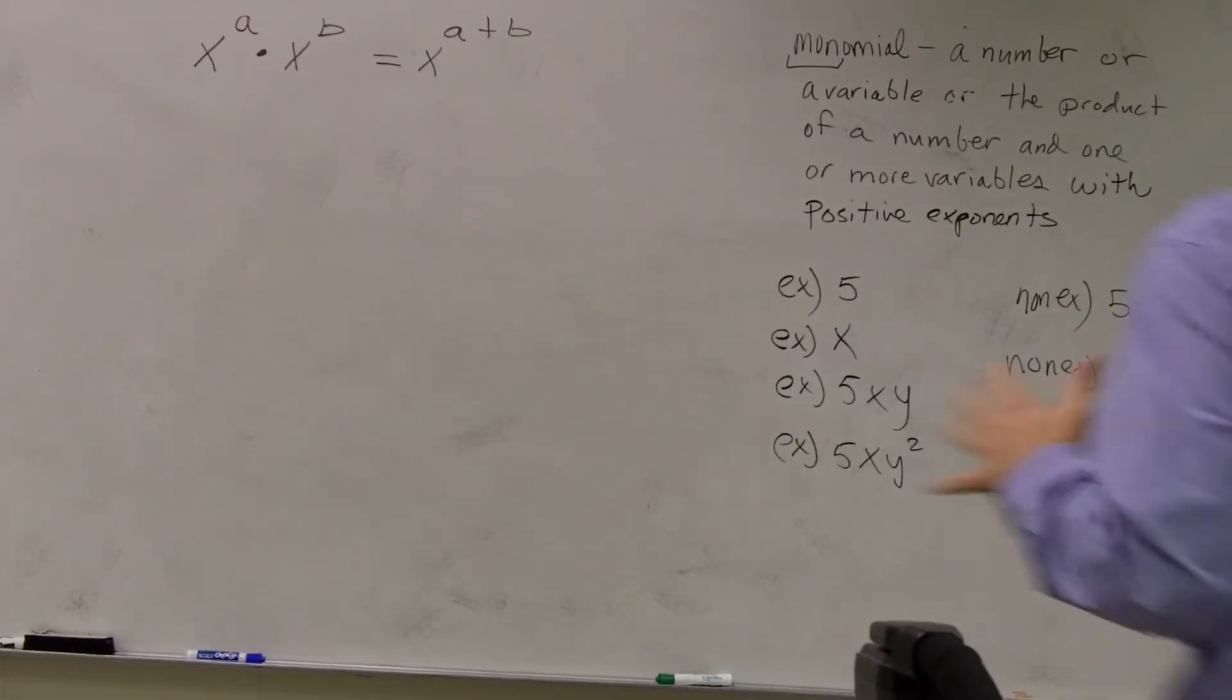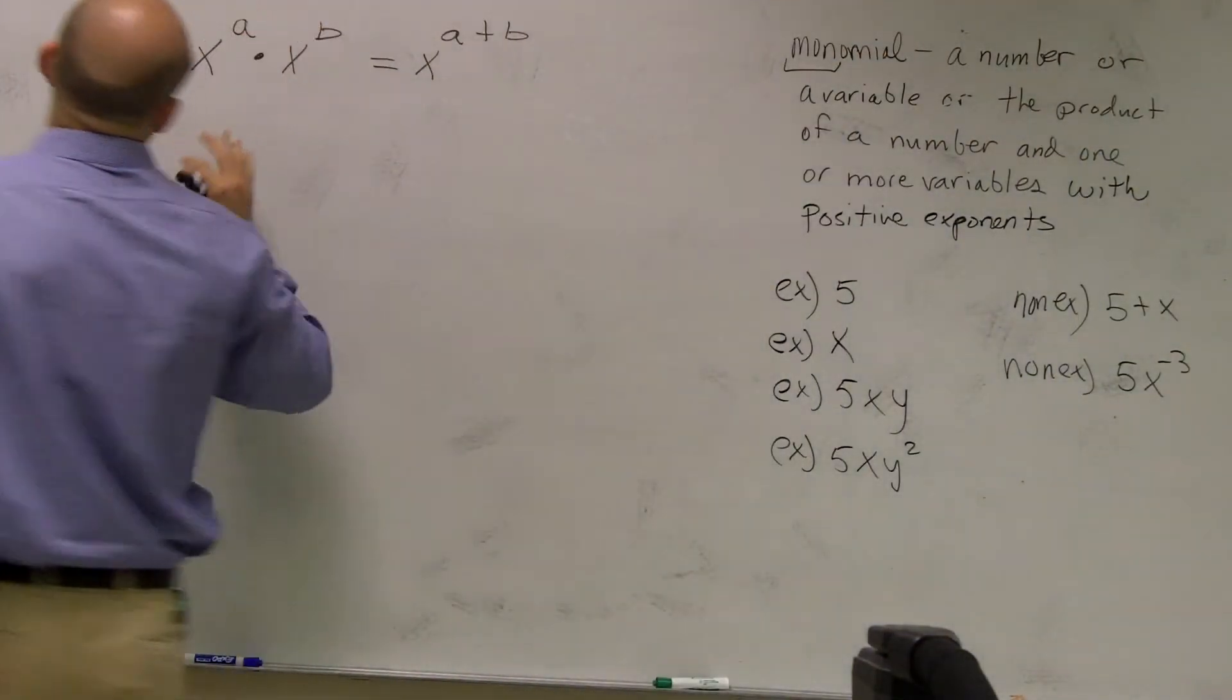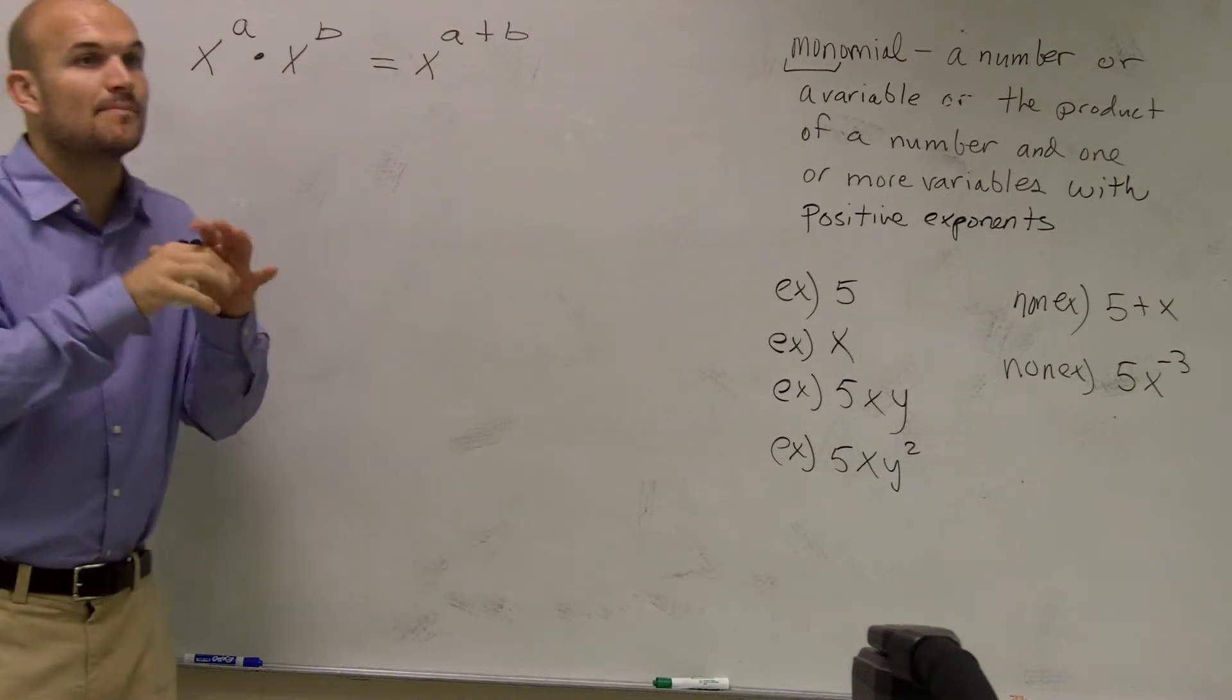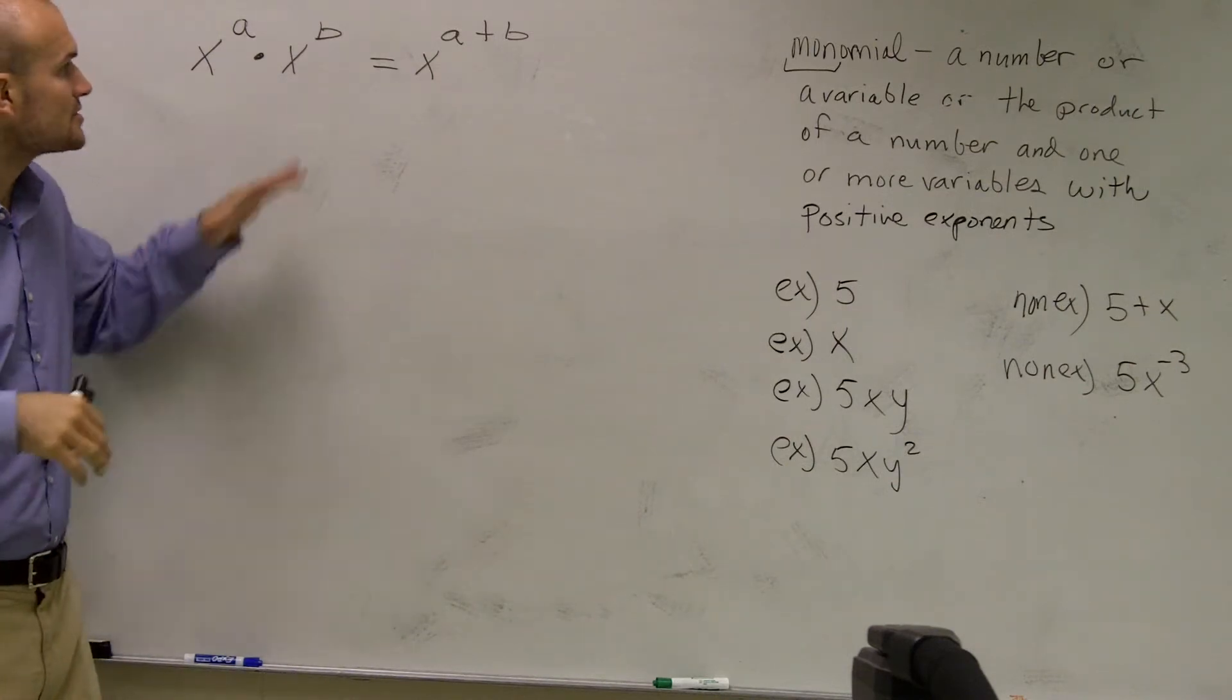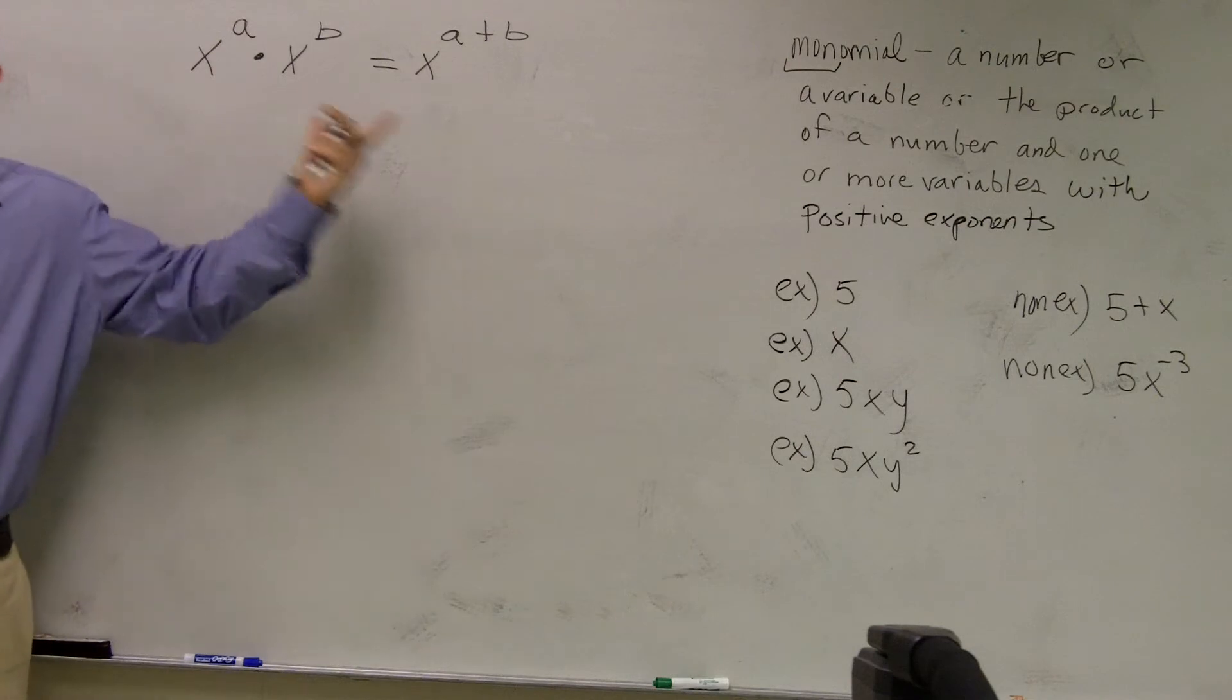OK. So our question is: how do the rules of exponents allow us to multiply and divide polynomials or monomials? The first thing I want to look at is multiplying.